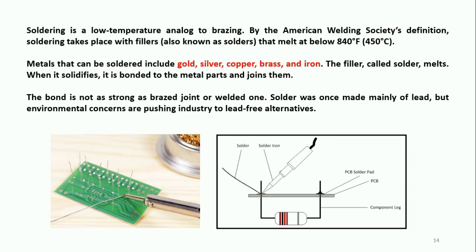What is the difference between soldering and brazing? In brazing, the operating temperature is above 450 degrees Celsius; here in soldering it is below 450 degrees Celsius. We can use soldering to join gold, silver, and copper. As mentioned, we need a filler — the solder.